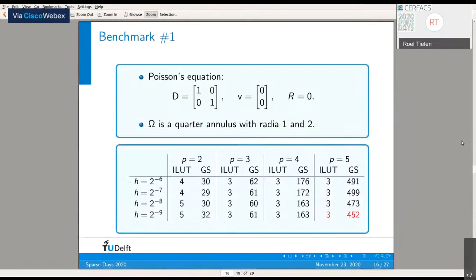If we look at iteration numbers, we see what we expect. Both smoothers lead to H-independent convergence. For example, in this Poisson equation, if you look at the columns, you see more or less the same numbers. But focusing on Gauss-Seidel for different P values horizontally, it grows quite fast in P. Comparing to ILU(T), it remains more or less constant in P as well. For P equals 5, there's already a factor of 150 in iterations difference between the two.